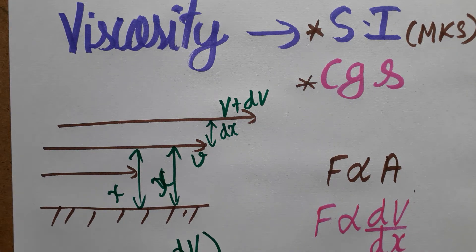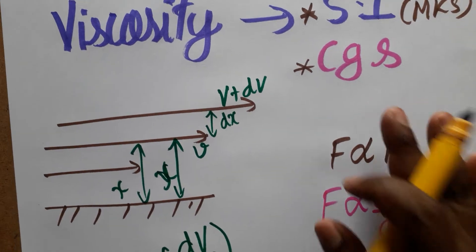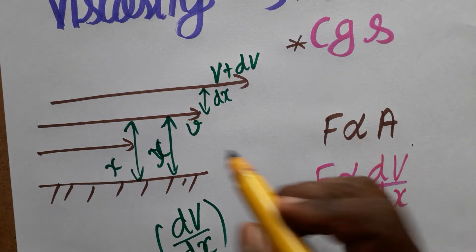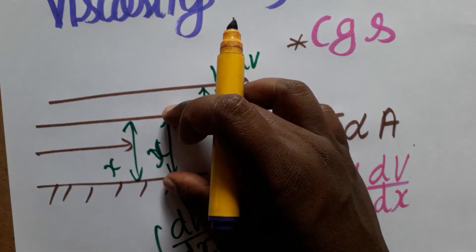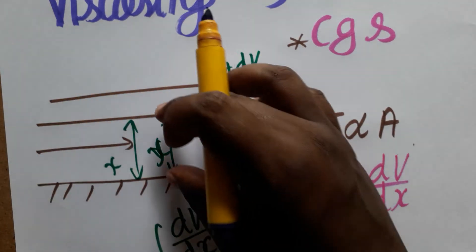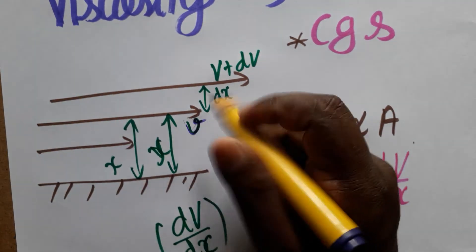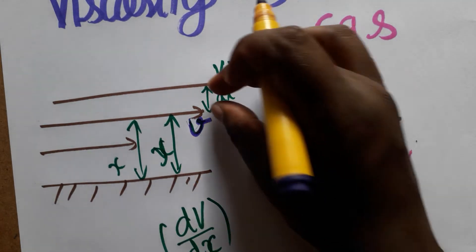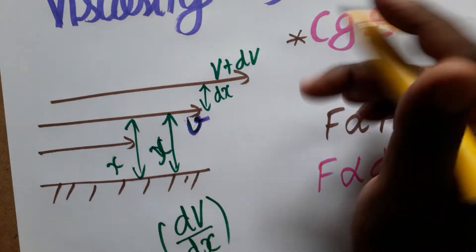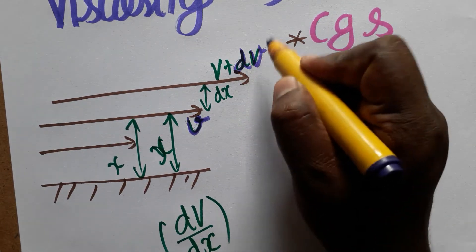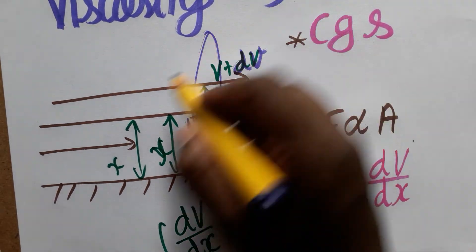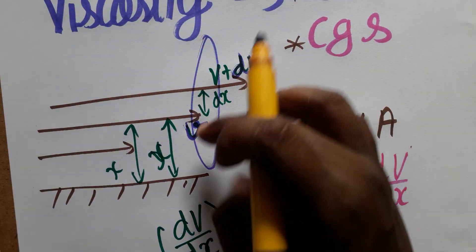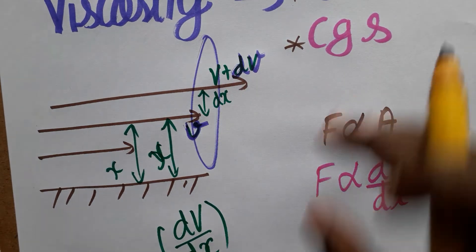The coefficient of viscosity is the internal friction of a liquid — it is a kind of frictional force. When a liquid is flowing in a pipe, at distance X from the surface, the liquid flows at velocity V. As we increase by distance DX, the velocity increases by DV. At the center of the pipe the velocity is maximum, and from the surface it keeps increasing.